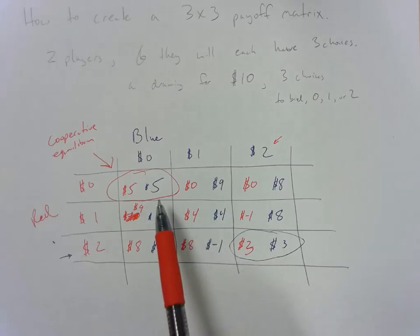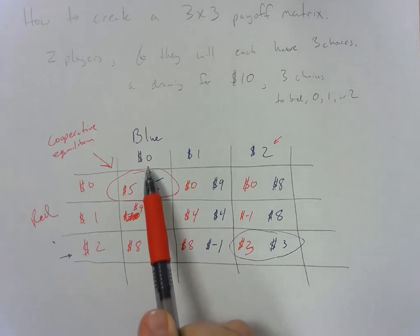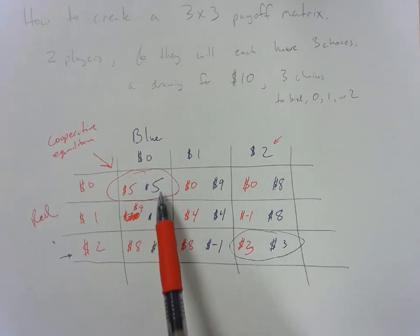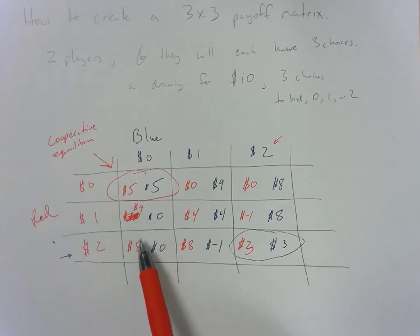But there's no incentive to end up staying here in the short run because if blue were to say okay I'm going to bid two dollars, well red could easily increase their payoff by just bidding one or two dollars. So this is how you create a three by three payoff matrix. I hope that was helpful.